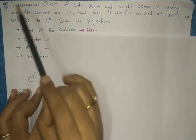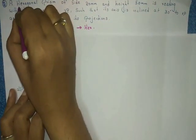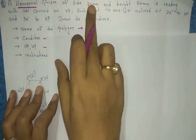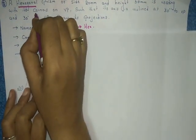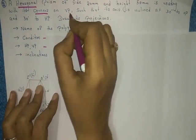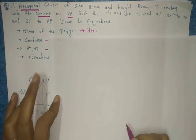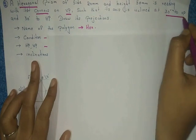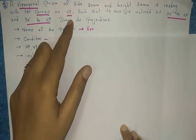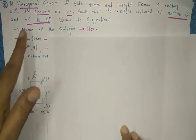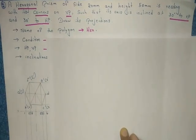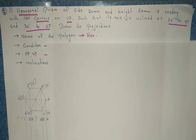In this question, the name of the polygon is hexagon, so we construct a hexagon. The condition is side 20, height 50, resting with its corners. We start the problem on VP since corners are on VP. The inclinations are 30 degrees to VP and 30 degrees to HP. Always read the question carefully for these four conditions.